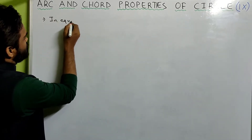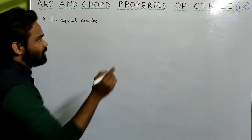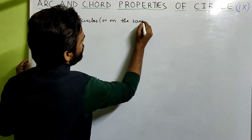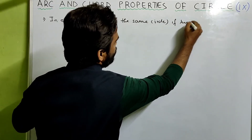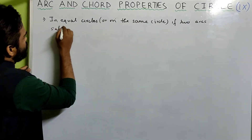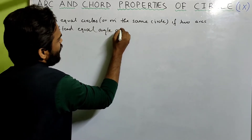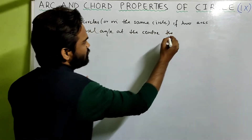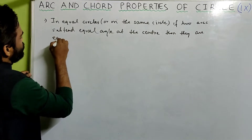In equal circles — which means circles having the same radius — or in the same circle, if two arcs subtend equal angles at the center, then they are equal in length, meaning they are equal arcs.